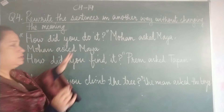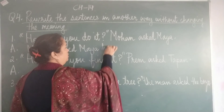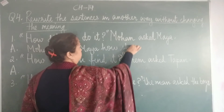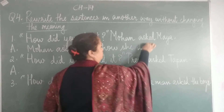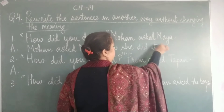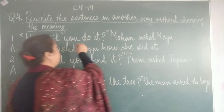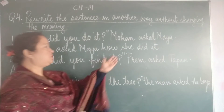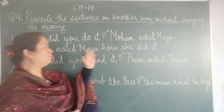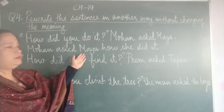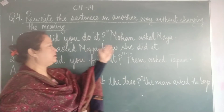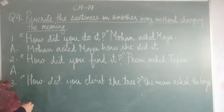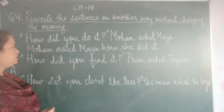What did he ask? He asked Maya how she did it. Now children, instead of 'you', what did I write? I wrote 'she'. Since Mohan is talking to Maya, we are writing 'she' instead of 'you'. Now let us have a look at the next one.